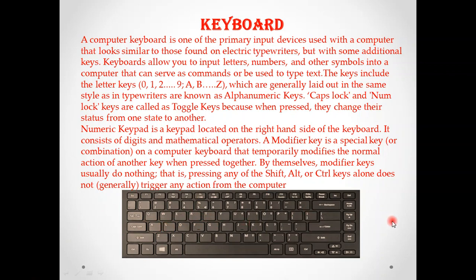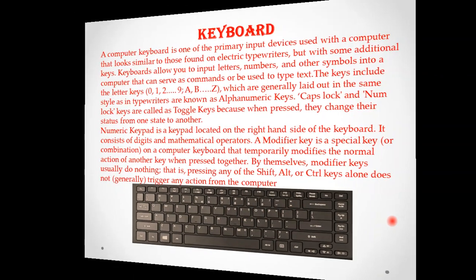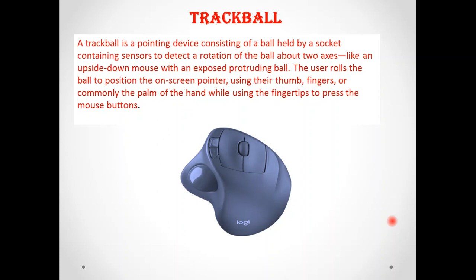After keyboard, there is another input device: the trackball. Trackball is like a mouse; it is also a pointing device. It detects and senses rotation in the X and Y axis directions. You can use your thumb, finger, or palm to handle this device.